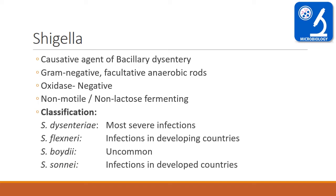Here is the classification of Shigella. Based on the somatic or polysaccharide region, Shigella species are divided into four groups. The first is Shigella dysenteriae, which can cause the most severe infections. The other is Shigella flexneri, which is present in developing countries. Shigella boydii is a very rare species, and last is Shigella sonnei, whose infection is present in developed countries.